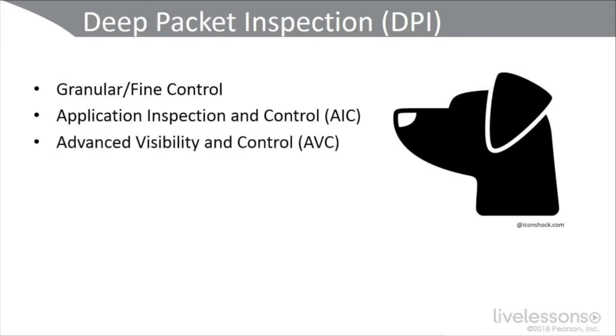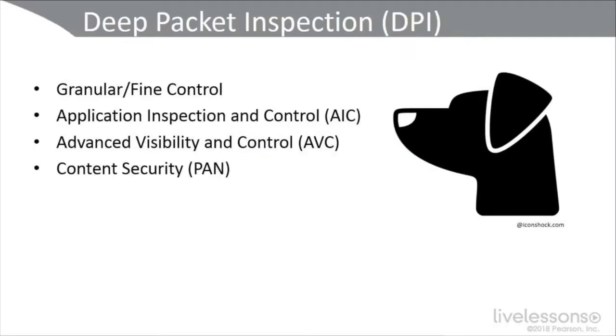Deep packet inspection is also referred to as granular or fine control. Your WAF — web application firewall — can provide application inspection and control with advanced visibility. We're looking at layers 5 through 7 of the OSI model, analyzing traffic not just based on port numbers but on the actual behavior of the application and how it uses data. We can use content security on a Palo Alto Networks NGFW with layer 5 through 7 policies. Palo Alto also has their Traps agent that runs on endpoints to participate in data loss prevention.